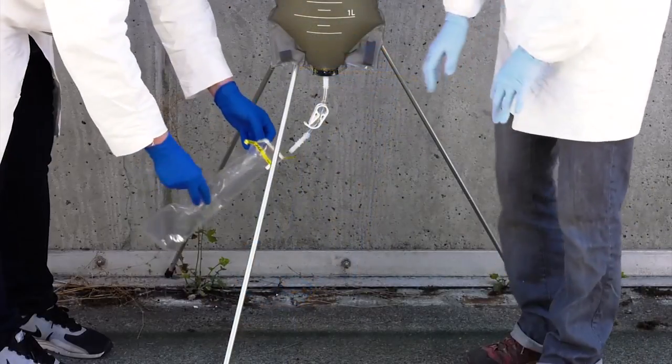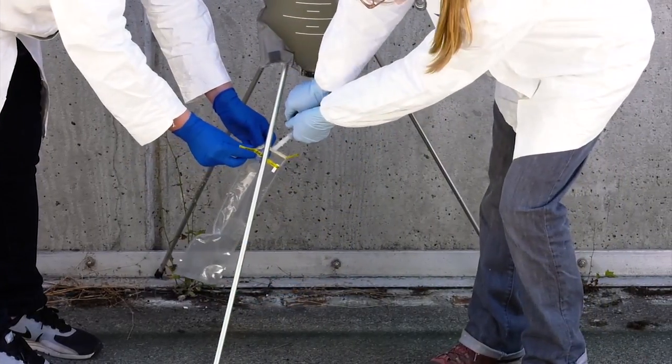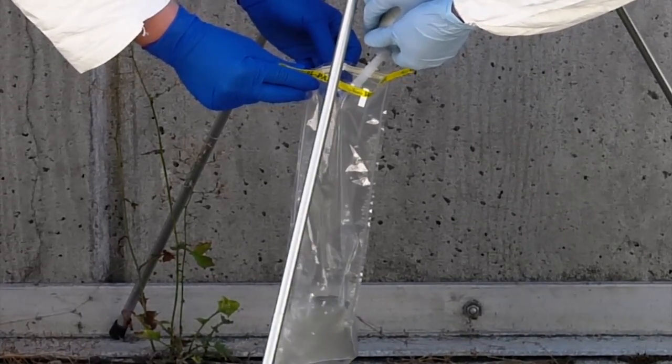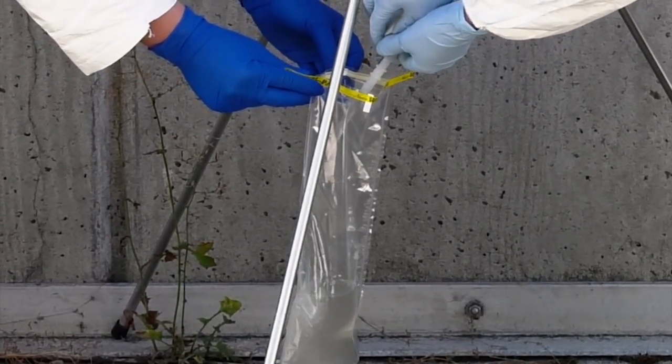After the settling period, the Clean Hands Technician should hold the Whirl Pack Bag below the bag outlet and the Direct Contact Technician should open the tubing clamp. Collect up to 1 liter in the Whirl Pack Bag.